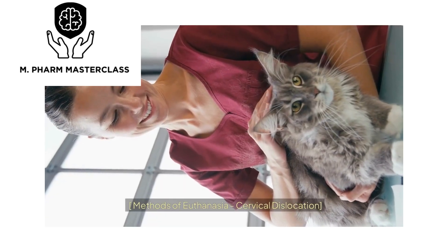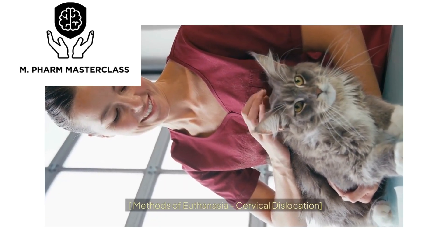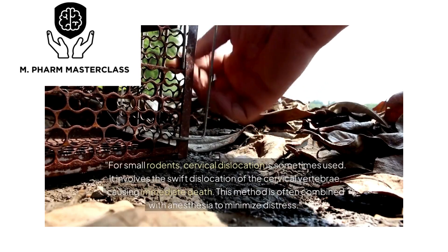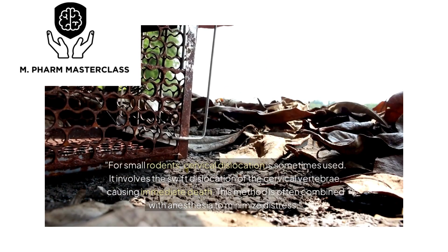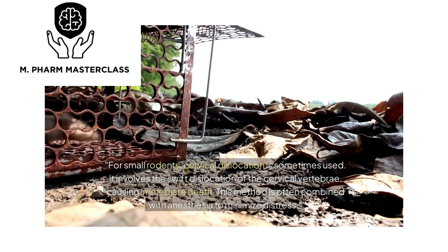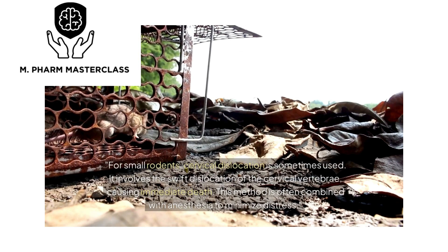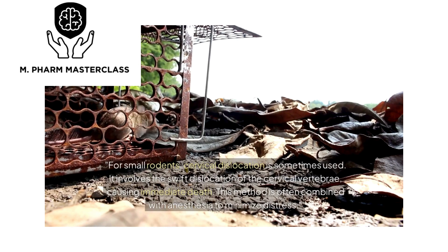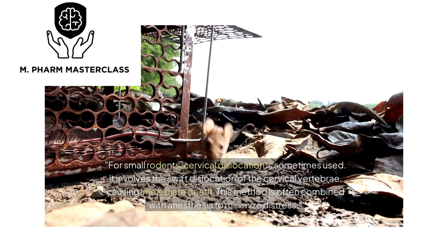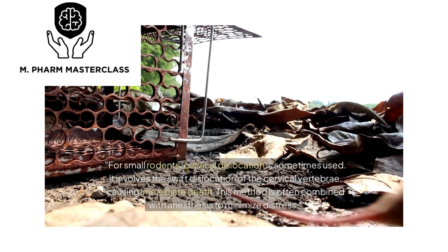For small rodents, cervical dislocation is sometimes used. It involves the swift dislocation of the cervical vertebrae, causing immediate death. This method is often combined with anesthesia to minimize distress.